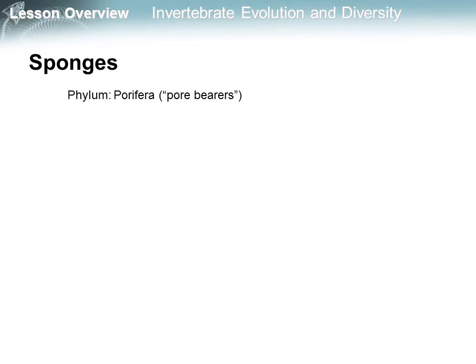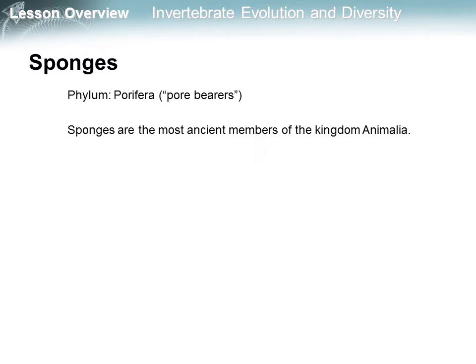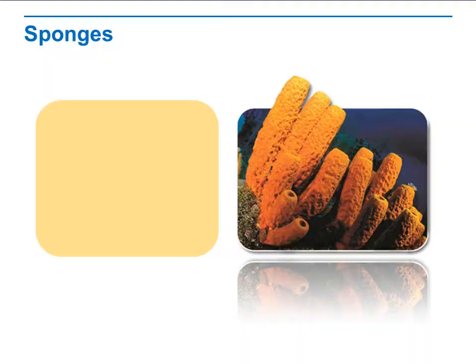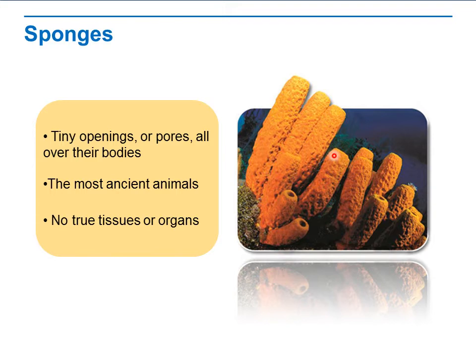Now let's see the detail of the Cladogram of Invertebrates, starting with sponges. Their phylum is Porifera, which means pore bearers. Sponges are the most ancient members of the Kingdom Animalia. They are multicellular, heterotrophic, they lack cell walls, and contain a few specialized cells. They have tiny openings or pores all over their bodies, and they have no true tissue or organs.